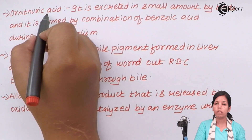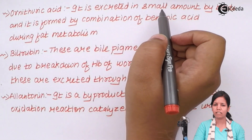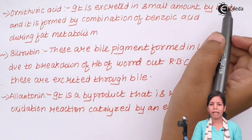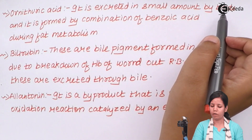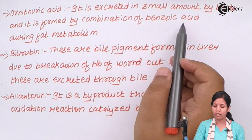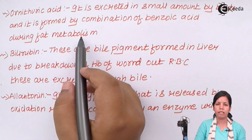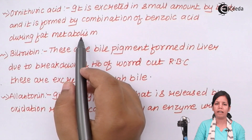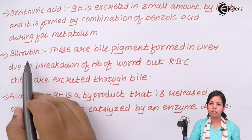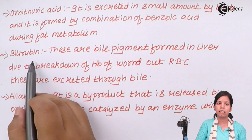Ornithuric acid is basically excreted in small amounts by aves, or birds, and it is formed by the combination of benzoic acid within fat metabolism or fat breakdown.